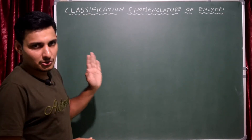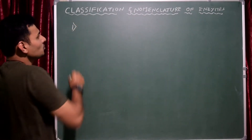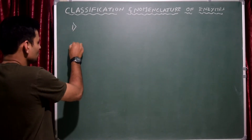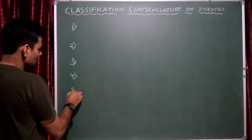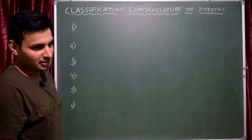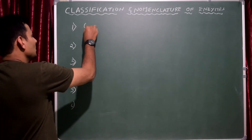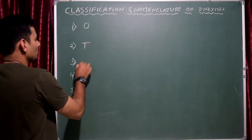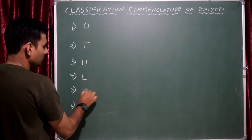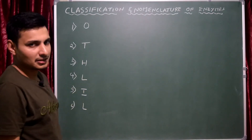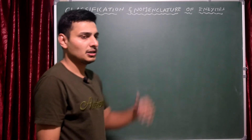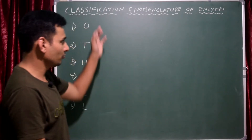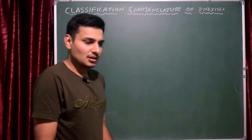This is the classification and nomenclature of enzymes. First, I am going to cover the six classes. There is a code for the enzyme classes — the first alphabet of each class: O, T, H, L, I, L. So OTHLIL is the code for the six enzyme classes. This code covers all the nomenclatures and names of the six classes.